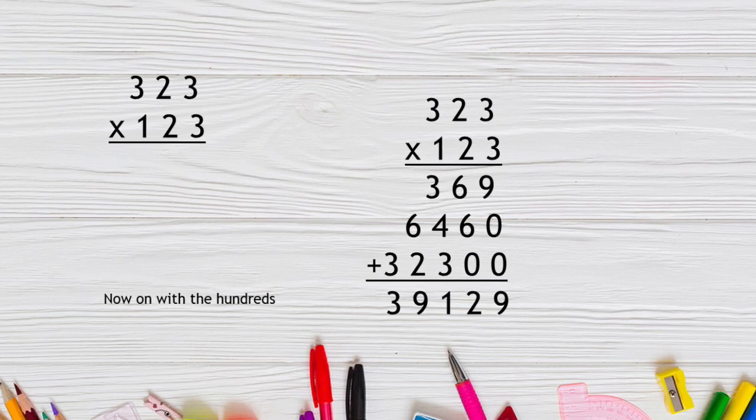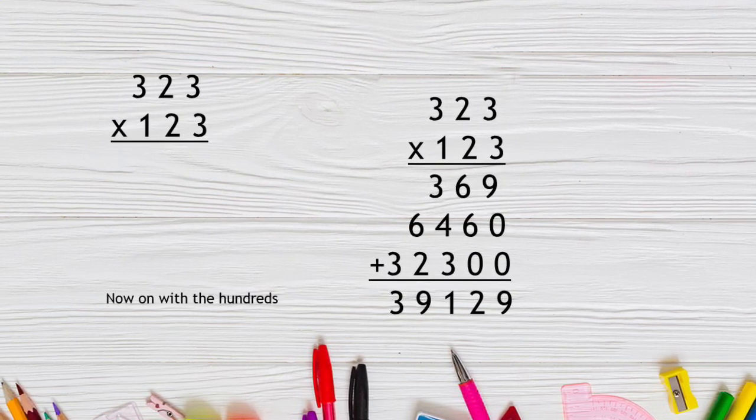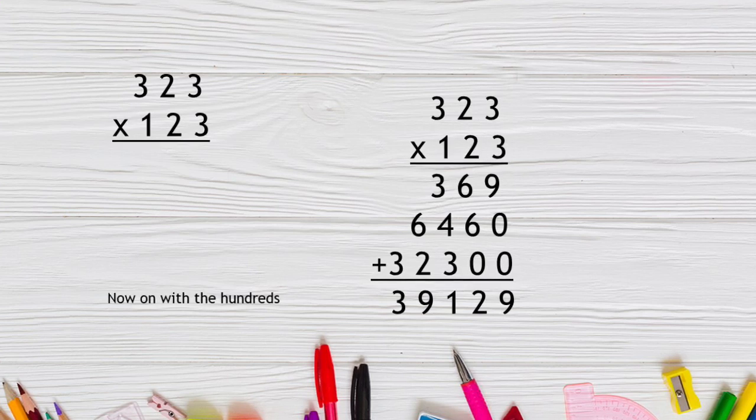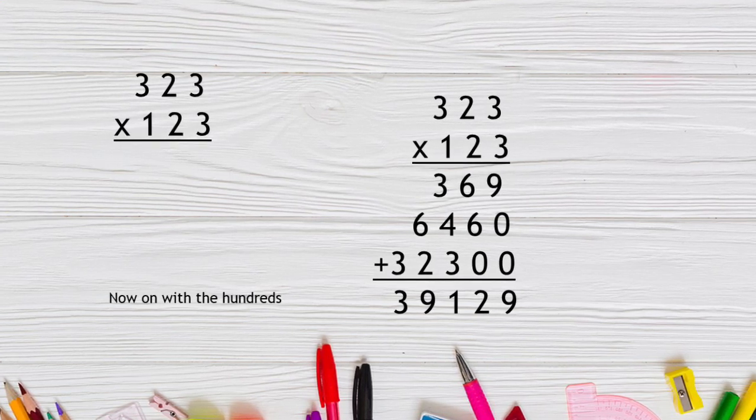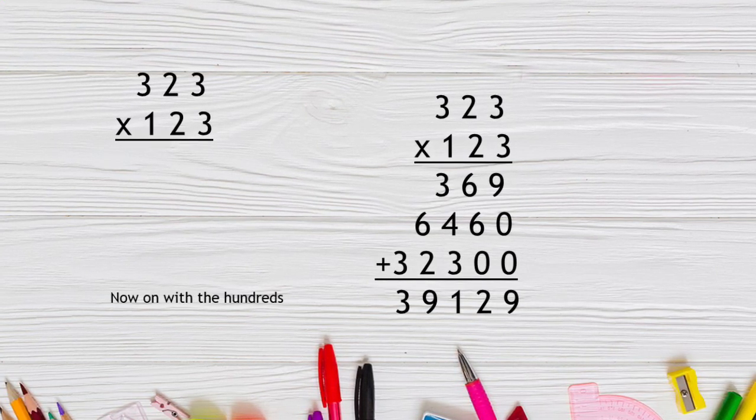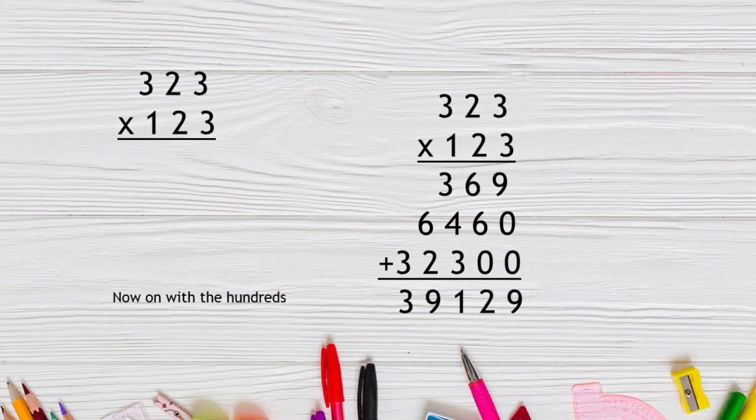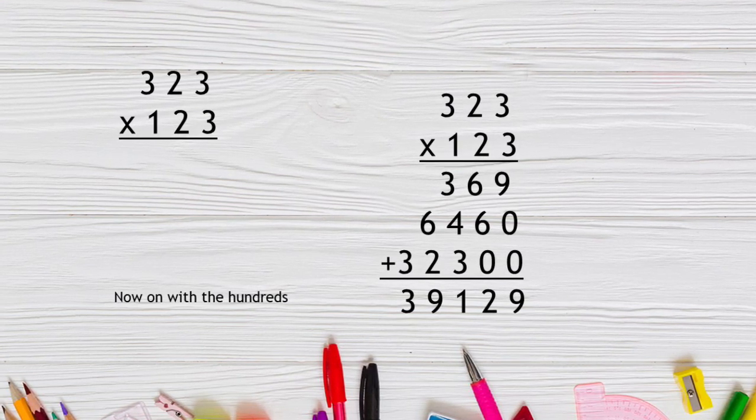Take the product of the ones, 369, product of the tens, 6,460, and the product of the hundreds, 32,300. Line them up and add, and the product or final answer will be 39,129.